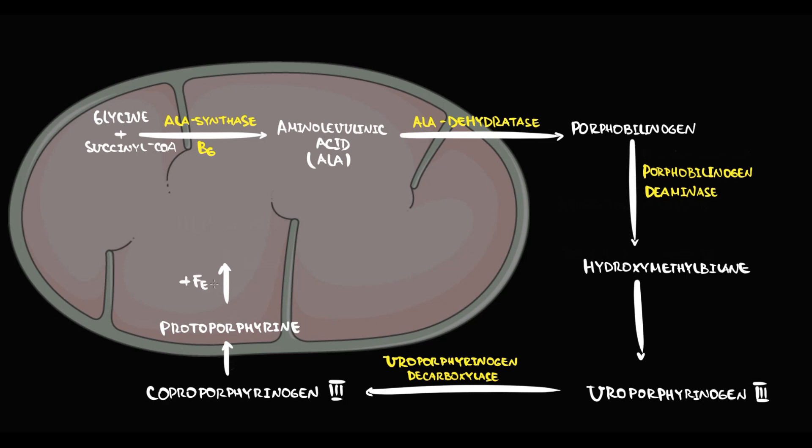Then the specific enzyme called ferrochelatase, which uses copper as a cofactor, binds iron to protoporphyrin, and this results in formation of heme. Then we bind heme to globin, and by this we produce hemoglobin. Then fully mature red blood cells with hemoglobin will enter into circulation.